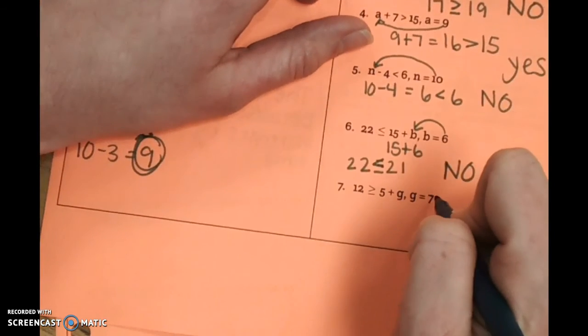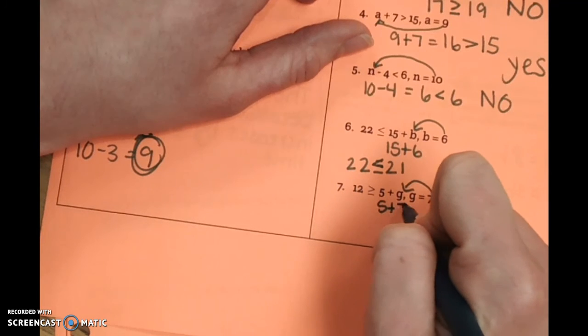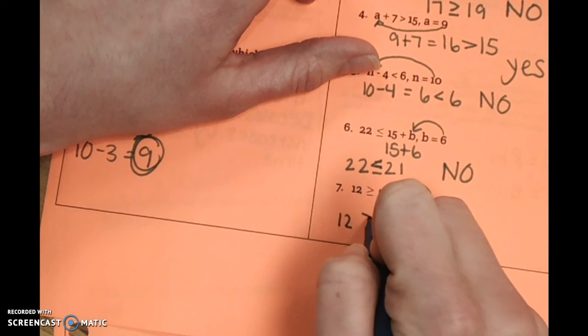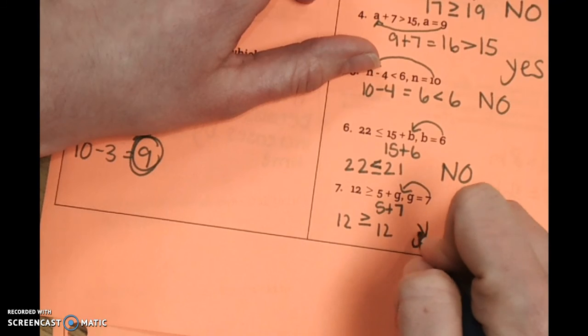And our last one, we're going to plug 7 in for d. 5 plus 7. That is 12. And then we have 12 is greater than or equal to 12. 12 and 12 are equal, so this one is a yes.